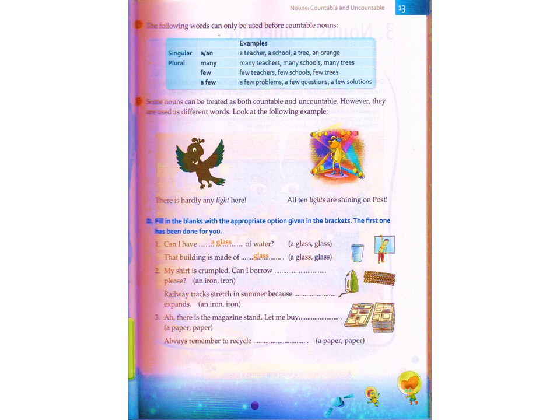Some nouns can be treated as both countable and uncountable. However, they are used as different words. Look at the following examples. There is hardly any light here — that comes under uncountable noun. Whereas here, all ten lights are shining on the post — we can count the lights. Ten lights: it comes under countable noun.